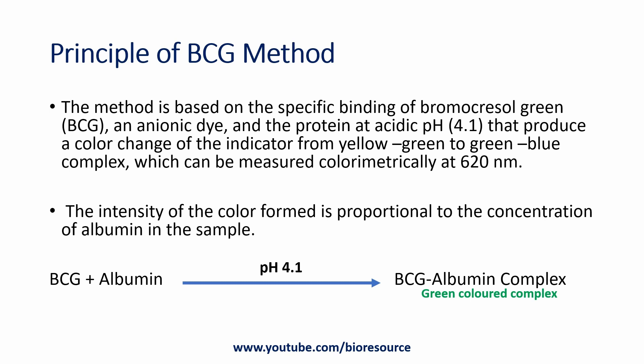The principle of estimation of serum albumin by BCG method — or the bromocresol green method — is based on the specific binding of bromocresol green, an anionic dye, with the protein at a pH of 4.1. This produces a change in the color of the indicator from yellow to green or greenish blue. This colored compound can be measured colorimetrically at 620 nanometers.